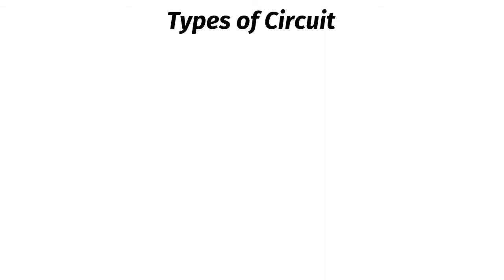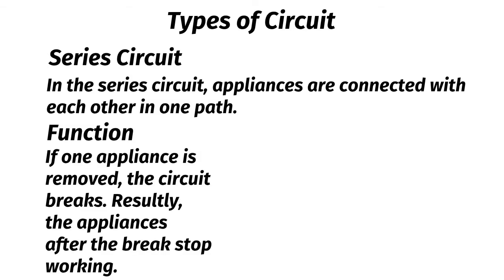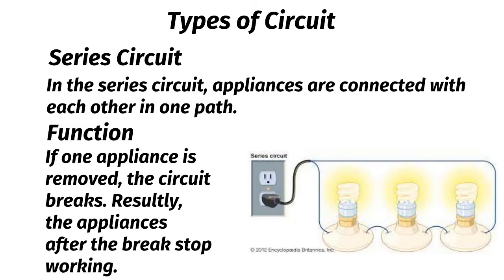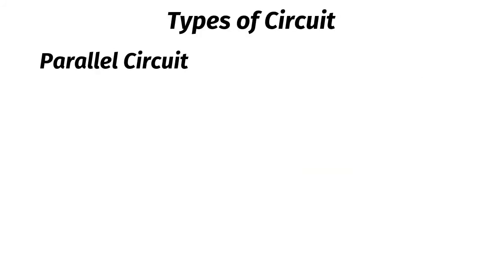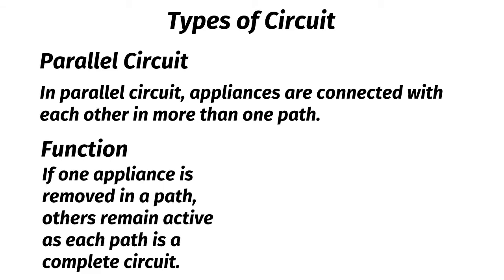Types of circuit. Series circuit: in a series circuit, appliances are connected with each other in one path. If one appliance is removed from the path, others remain active, as each path is a complete circuit.